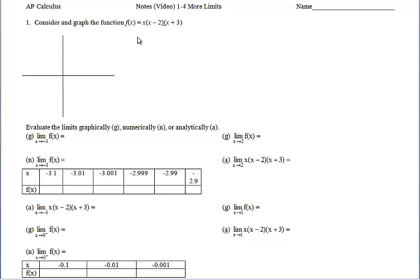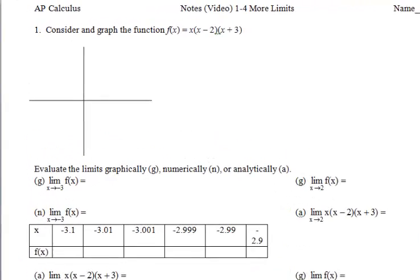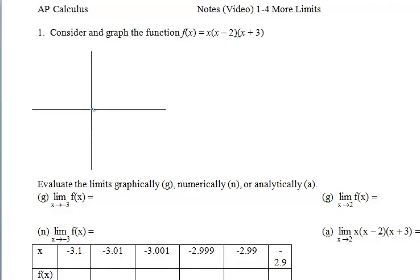Without picking up a calculator, we can quickly graph the x-intercepts. We know the zeros of this function occur at x equals 0, x equals 2, and x equals negative 3.